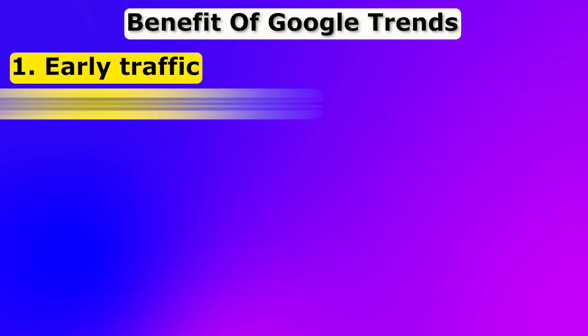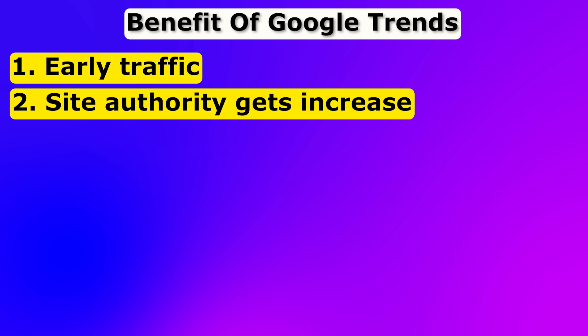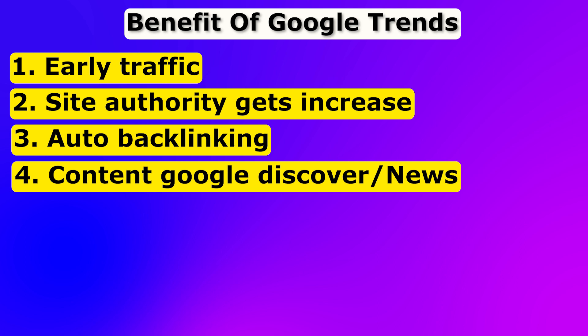I am doing a 90-day challenge for one of my new blogs, and we are using Google Trends only — it is helping us write newer content. The benefits of using Google Trends: Benefit one — early traffic, you can get massive traffic very early. Benefit two — site authority gets increased automatically. Benefit three — auto backlinking: if your site ranks number one, news channels will create backlinks to your site, making it more powerful.